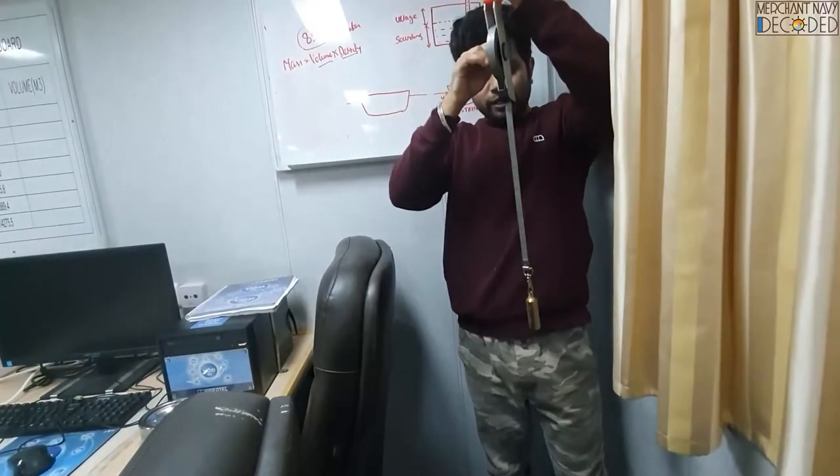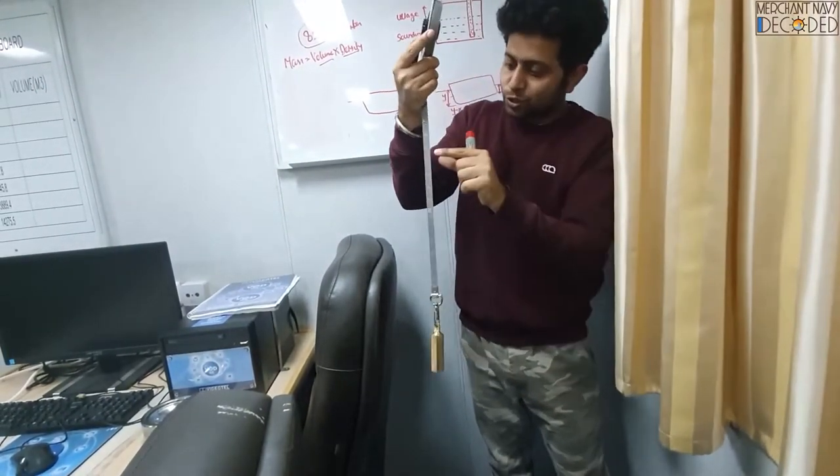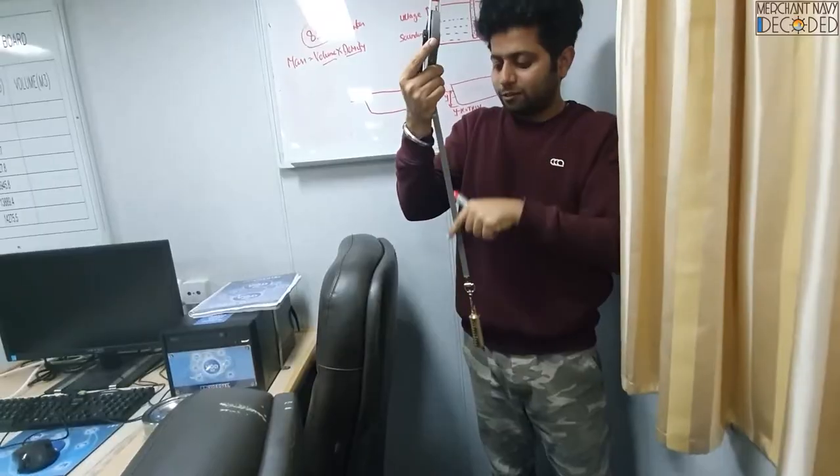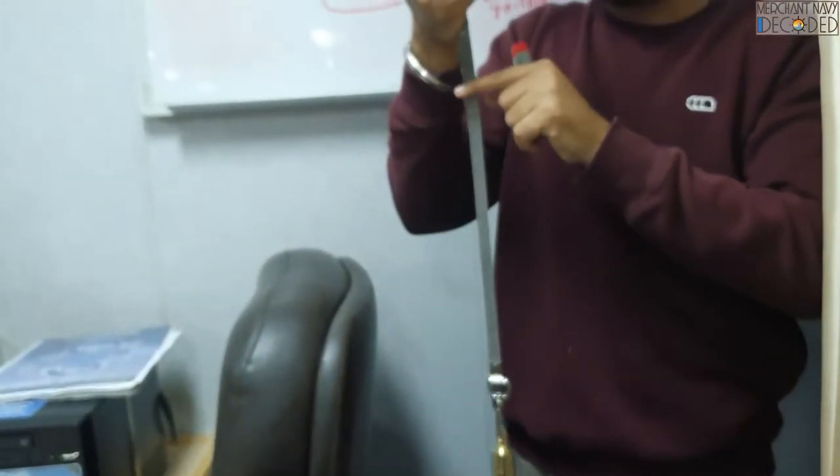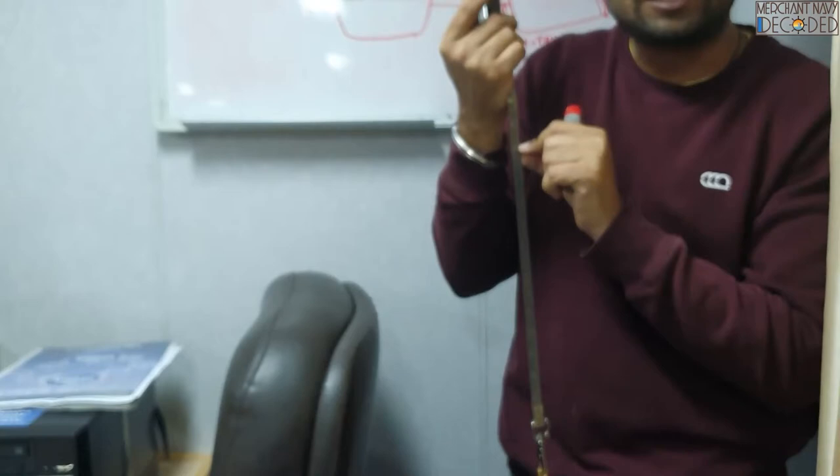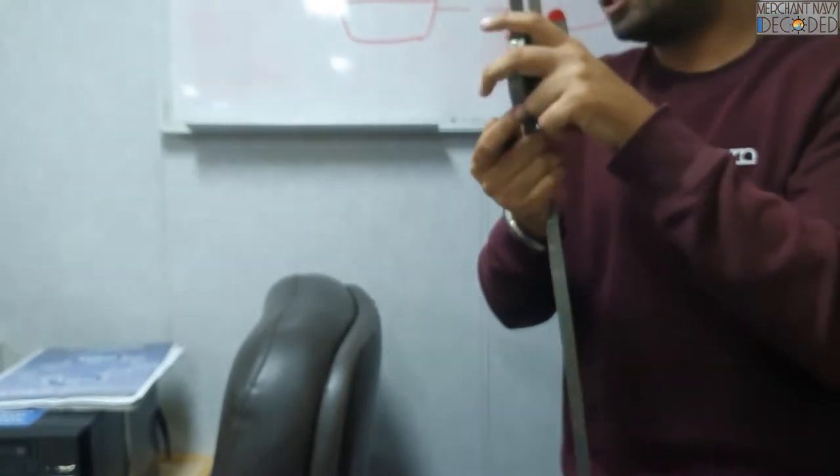Now suppose you put it inside dirty water. So you will know, okay dirty water was still there. It will become all dirty. So you get a very good idea, this much was the level till where it was dirty. That is how you calculate on board ship as well.